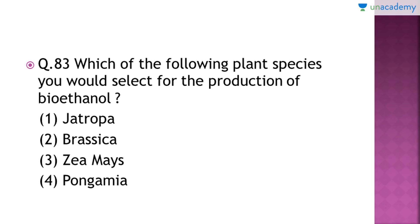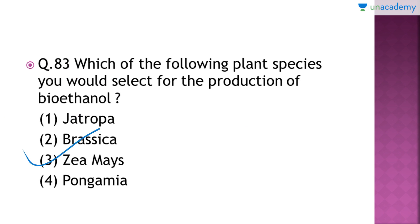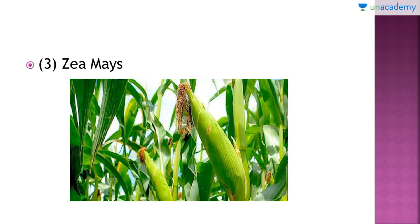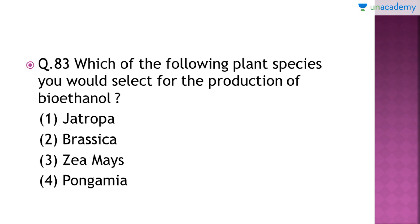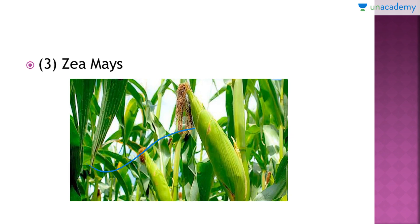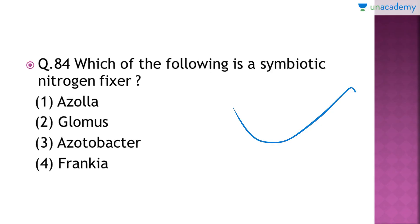Question number 83: 'Which of the following plant species would you select for the production of bioethanol?' The answer is option number 3 — Zea mays (maize). Bioethanol is produced by the sugar fermentation process; the crops required are energy crops including maize, corn, and wheat. Since Jatropha, Brassica, and Pongamia are not energy crops in this context, Zea mays is the correct answer.